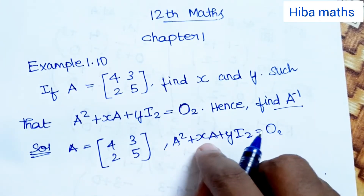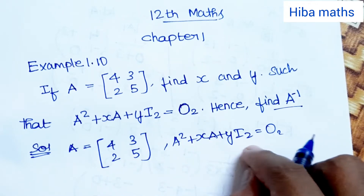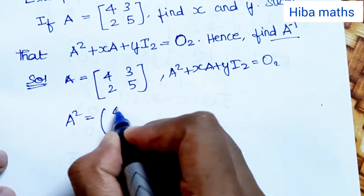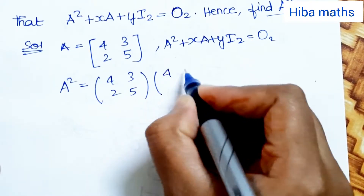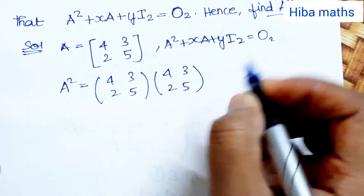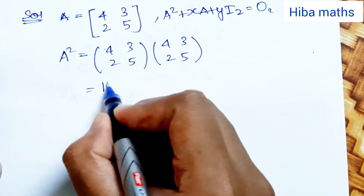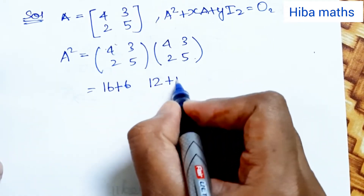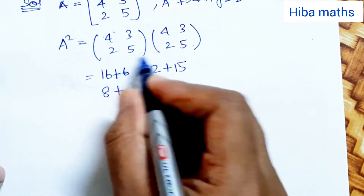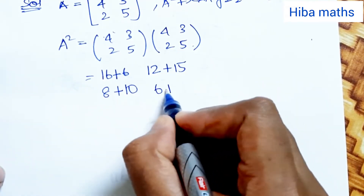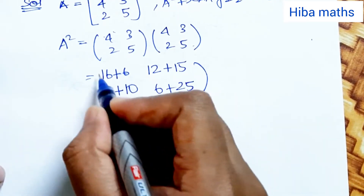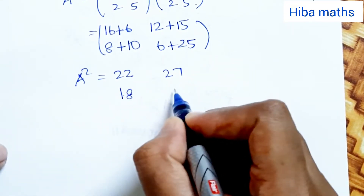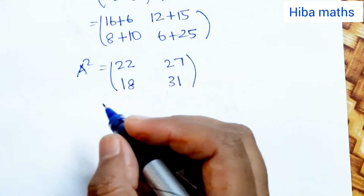Now, A² is computed from A = [4,3,2,5]. Multiplying: 4×4 + 3×2 = 22, 4×3 + 3×5 = 27, 2×4 + 5×2 = 18, 2×3 + 5×5 = 31. So A² = [22, 27, 18, 31].